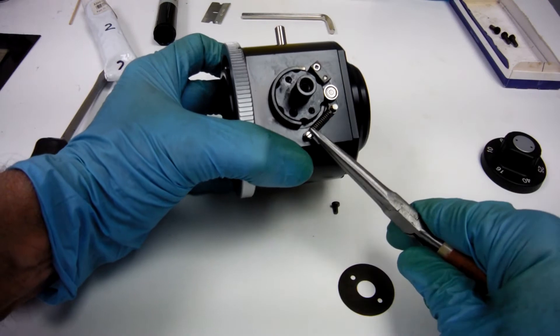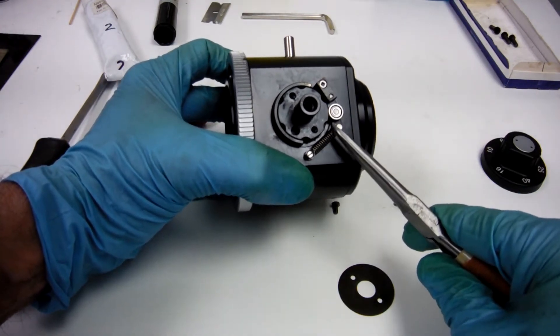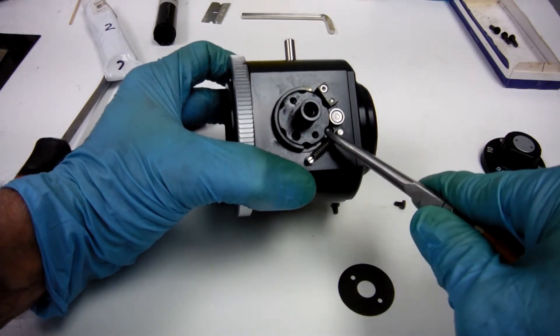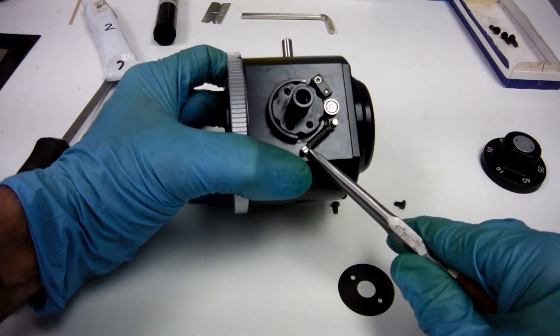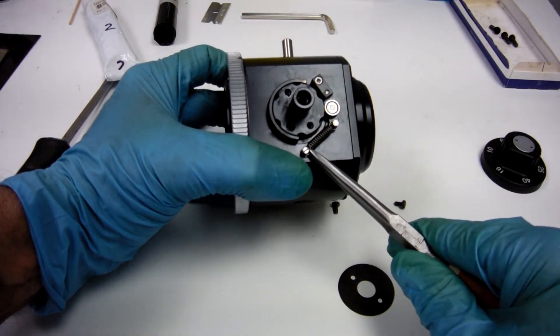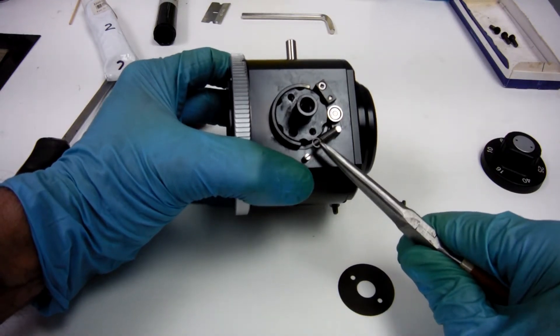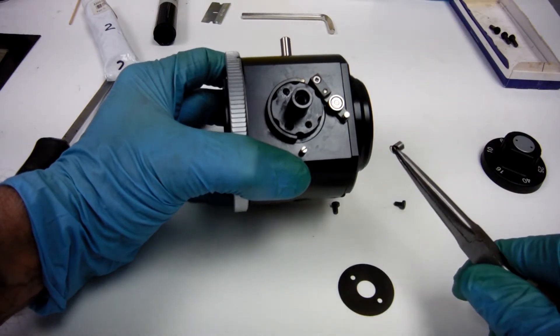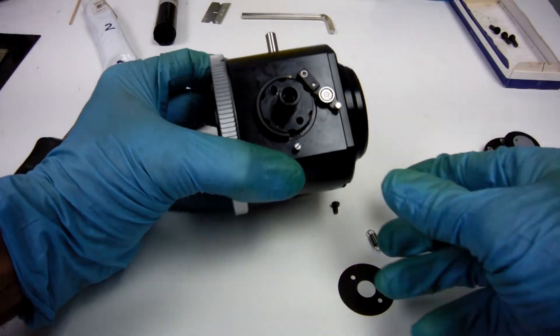You have a spring here that holds this bearing. The bearing goes into these notches that are on the end of this barrel. We'll take the spring off. Be careful. It might want to travel. Got that? Put that out of the way.